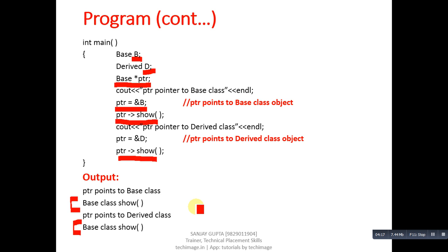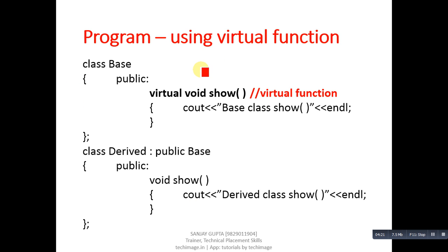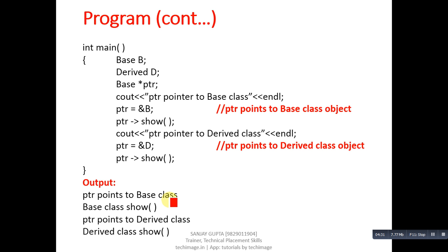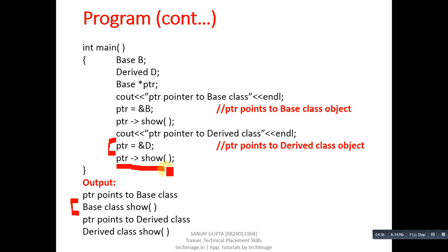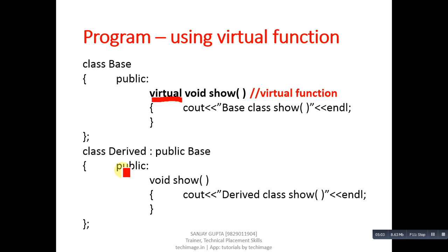This second program is implemented using virtual function. In the base class, the virtual keyword is used before the show function; remaining definitions are the same for both classes. The main function is also the same — base class pointer, base class object, and derived class objects are created. When ptr holds the address of the base class object and ptr arrow show is called, the base class show function is executed. Then ptr is assigned the address of d, and ptr arrow show is called.